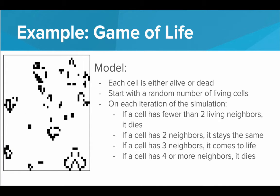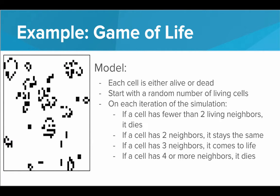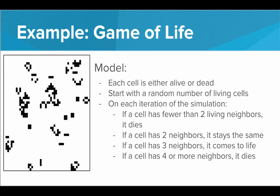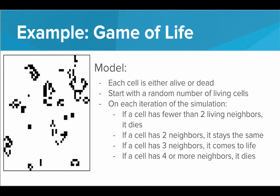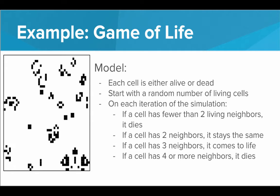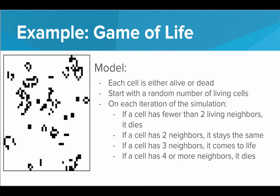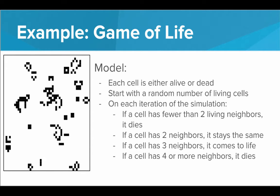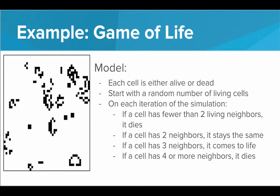If a cell has exactly three neighbors, then it comes to life. So if there was no life there, there now is. But if it has four or more neighbors, it dies from overcrowding. This is just one example model of how the game of life could play out. Simple rules that dictate how these cellular organisms are living and dying in a crowded space.